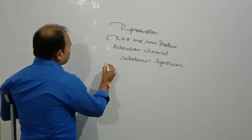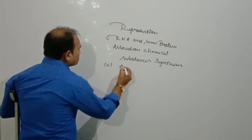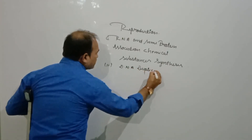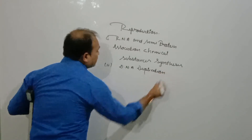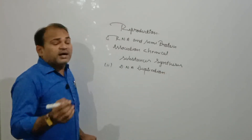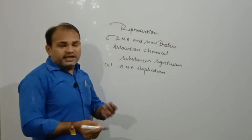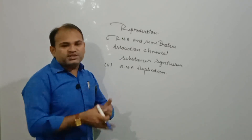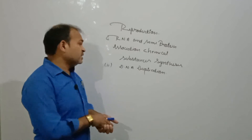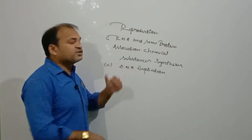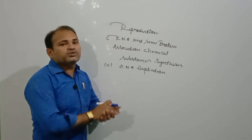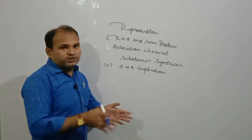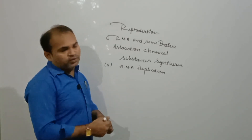इसका second feature है DNA duplication। DNA जो है, एक type का hereditary material होता है, और यह parent की information को store कर लेता है। यह एक generation से दूसरी generation में transfer होता रहता है। DNA duplication का means है कि जो old DNA होता है, वो new DNA में continuously convert होता रहता है।